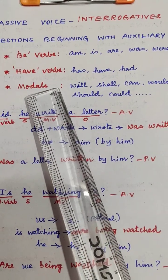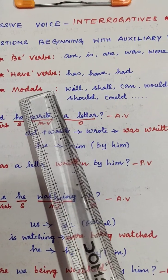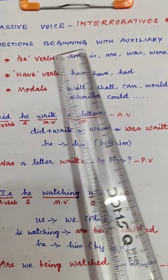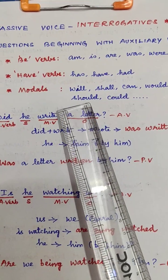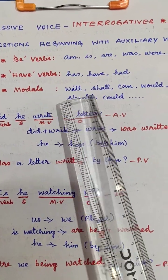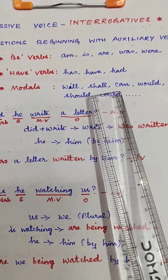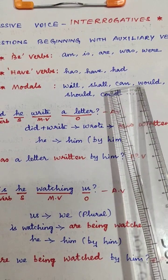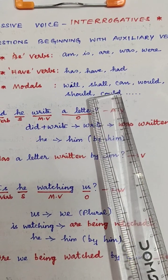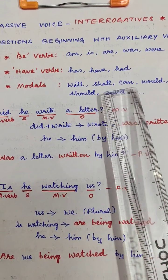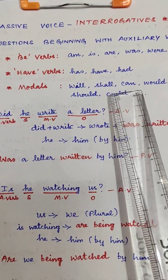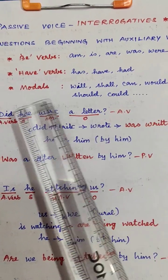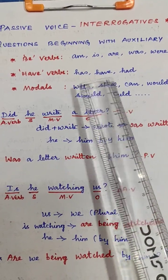Modals — I will learn modals: will, shall, can, would, should, could, may, might, etc. So those are modals. And then the question is beginning with auxiliary verbs.